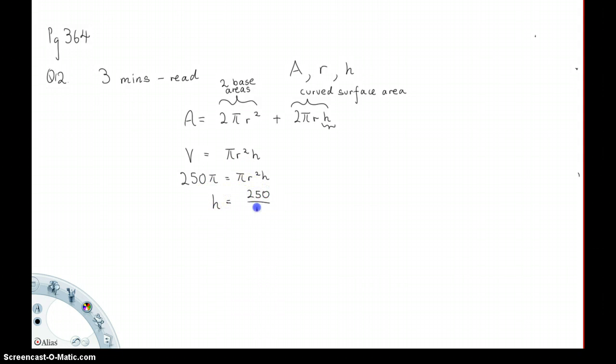We'll substitute expression 2 into 1. We will get A equals to 2πr² allied with 2πr.